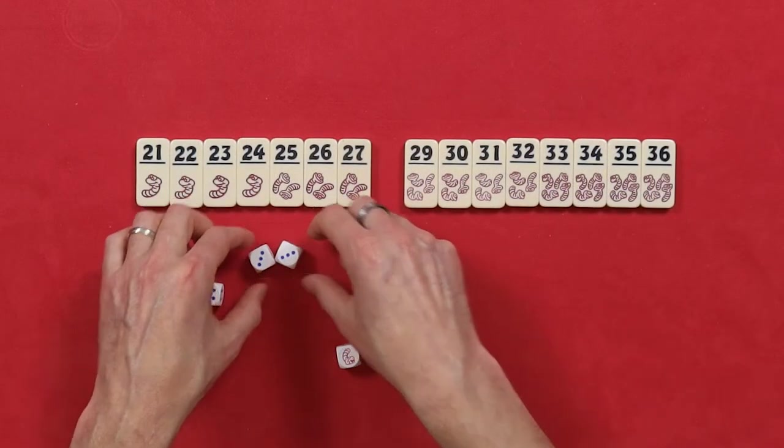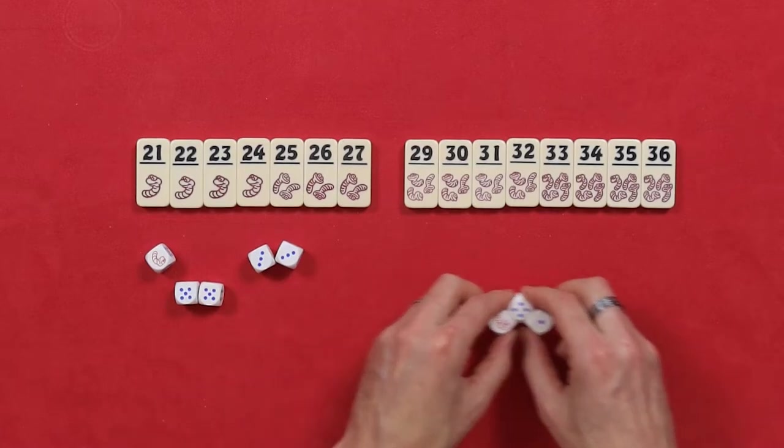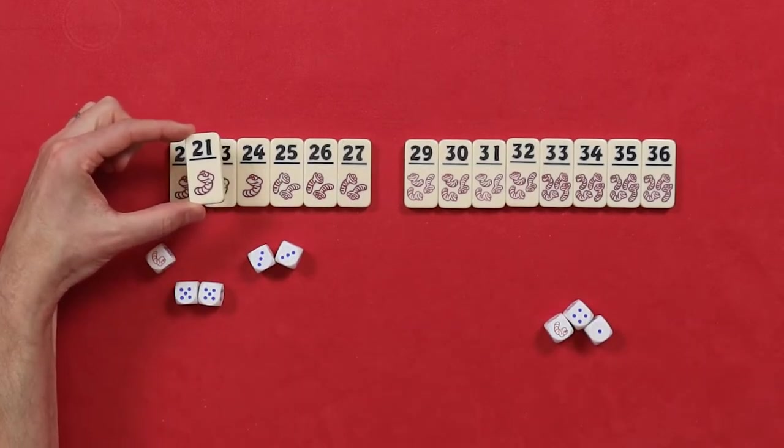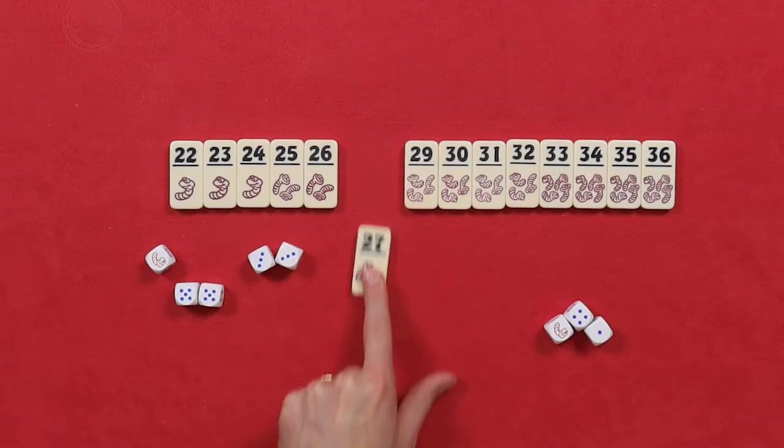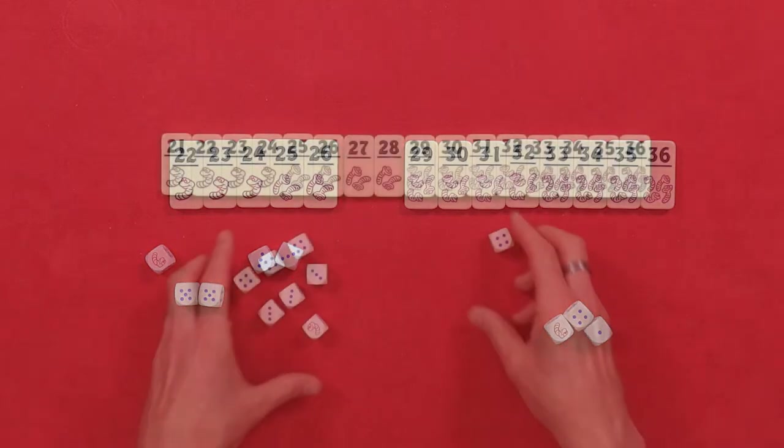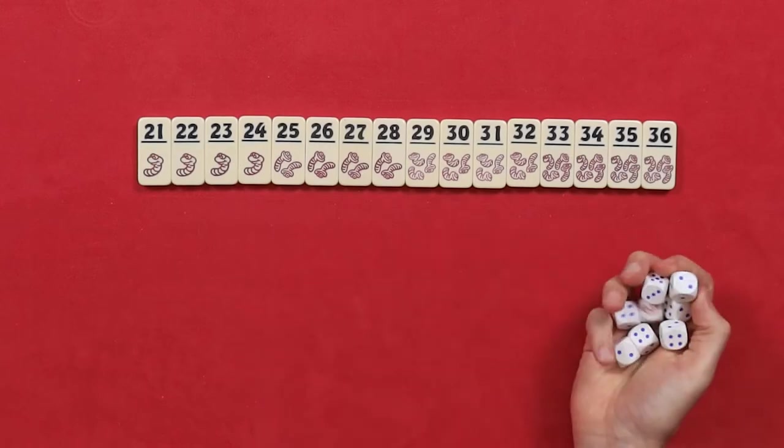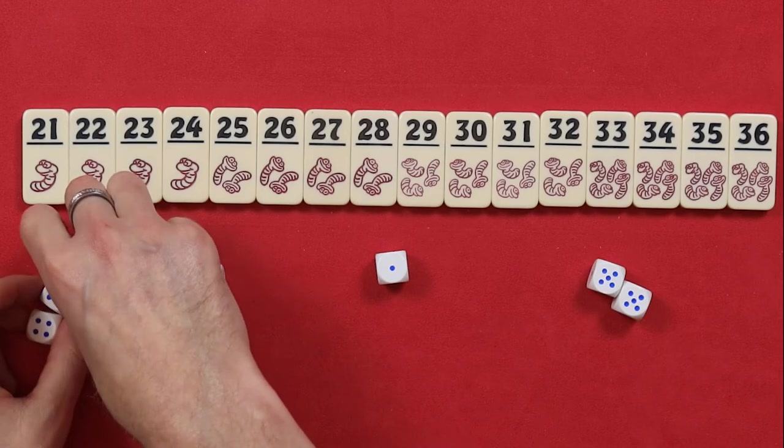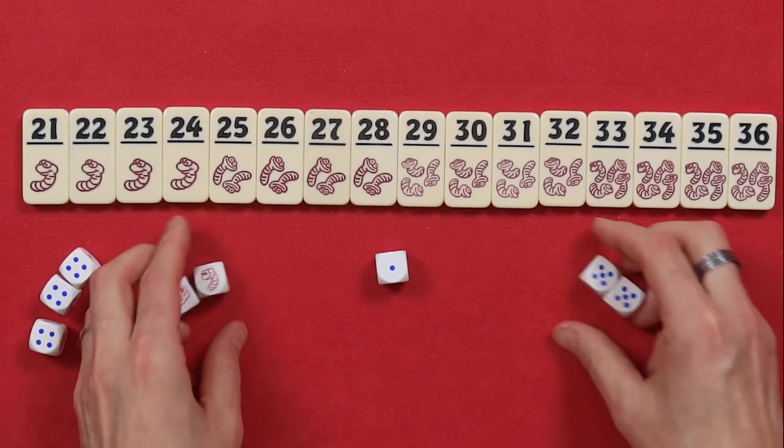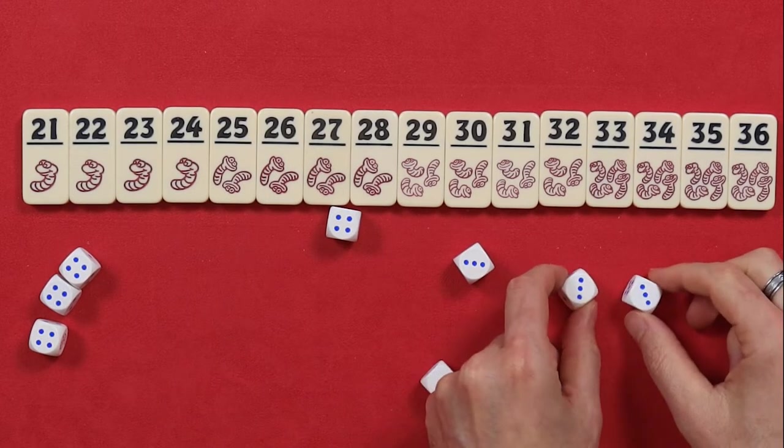Keep rolling until you have either taken the tile from the display or busted. Remember, you need at least one worm set aside to take a tile. If you ever roll a number that's already been taken, you may choose to take the next lowest tile. Now, pass the dice to the player on your left who takes their turn. Keep rolling like the player before you. Keep in set of dice until you choose to take a tile or you bust. Keep playing until everyone has had one turn. Then, we'll go through a few more rules.